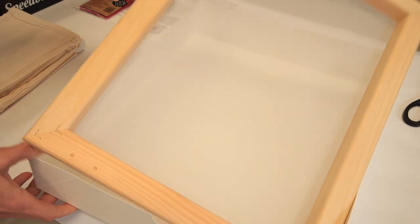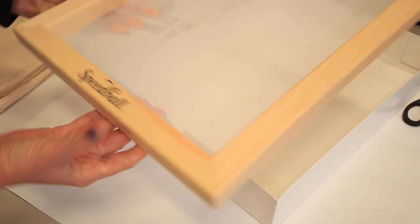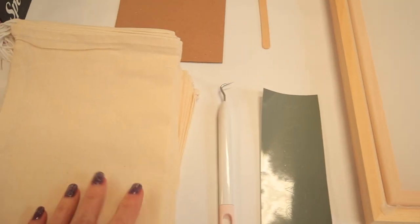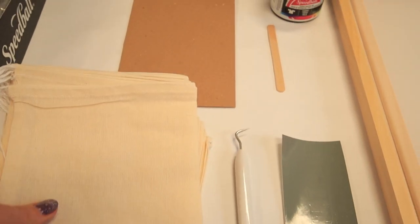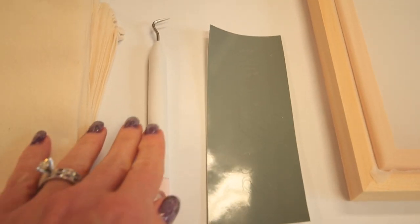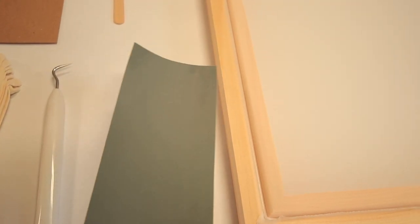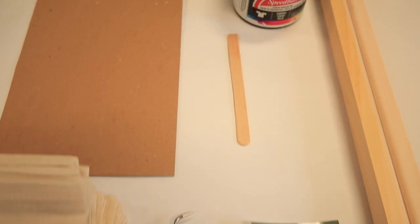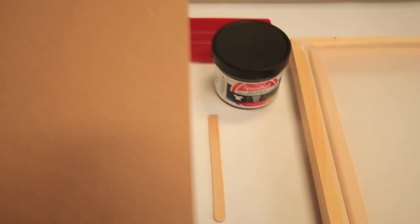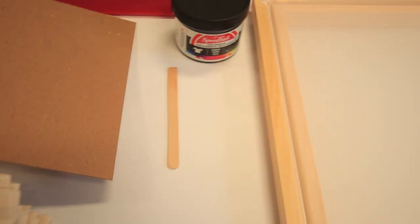And then of course the screen that we'll be using to do the screen printing. Alright, so I've got everything laid out. I've got my little bags here, these sacks. I also got these on Amazon. We've got a tool to use to weed out all of the letters.